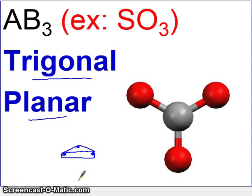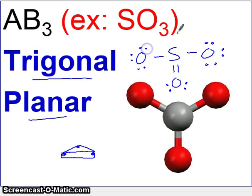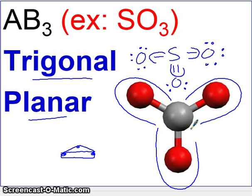The example here is SO₃. If you were to draw SO₃'s Lewis structure, you'll notice that sulfur in the middle has three areas of electrons around it. Those three areas will go as far as they can from each other, creating this arrangement. This is called Trigonal Planar.